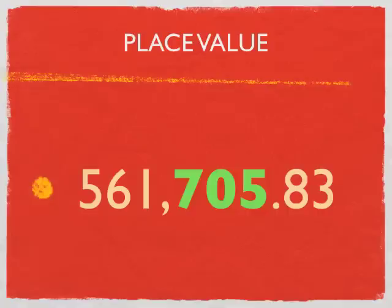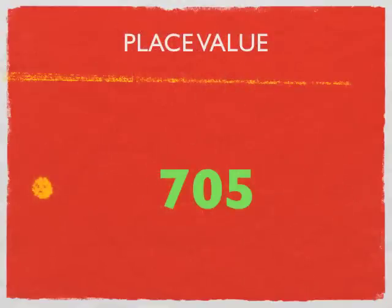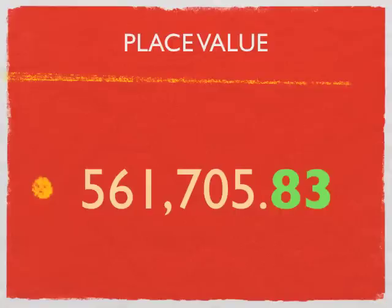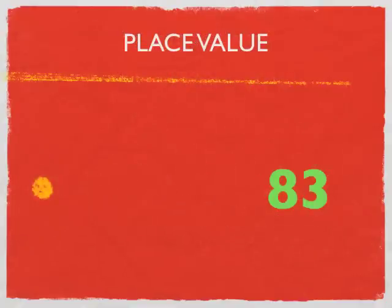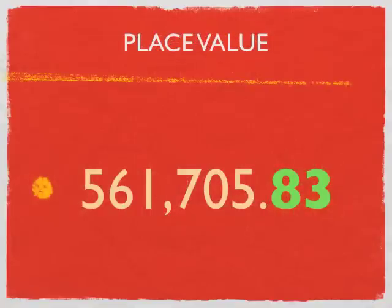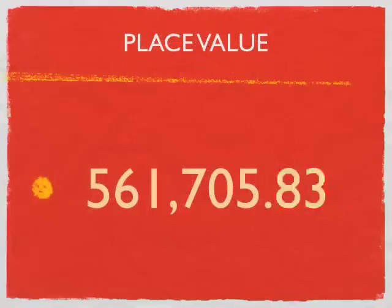Next up we've got a comma, and for this particular comma — the first comma we always find to the left of the decimal point — all you've got to say is the word thousand. Then we've got 705 sandwiched in the middle — you know how to say 705. The decimal point — always the word AND. And finally, we've got 83. It's not in the tenths spot, it's in the hundredths spot. So we've got 83 hundredths. All together: 561 thousand, 705, and 83 hundredths.